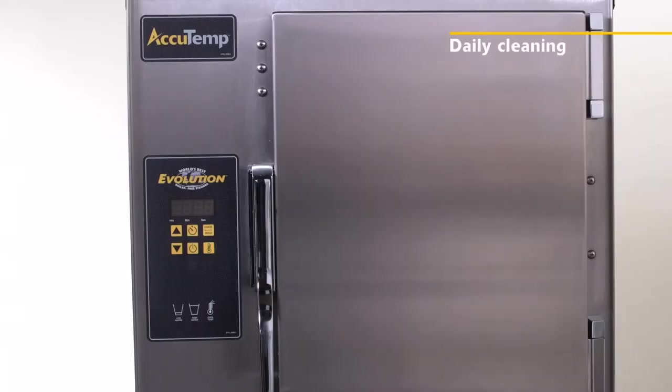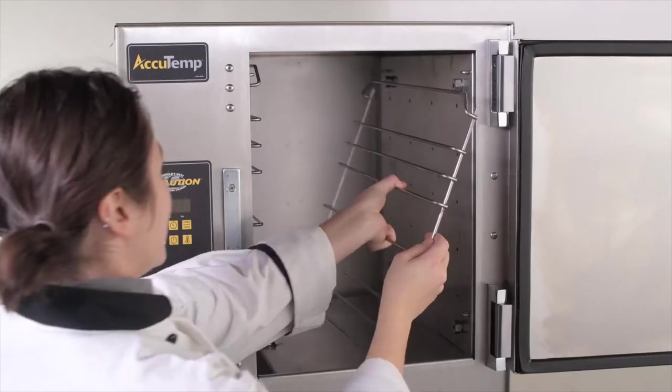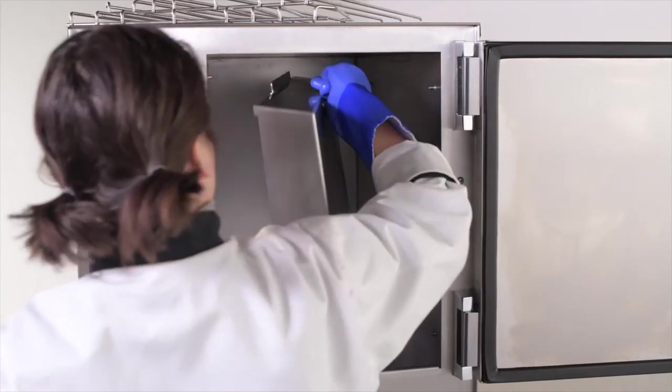Turn the steamer off and wait for the steamer to cool. Open the drain valve to drain water. Remove pan racks, steam distributor panel, and steam collector from the bottom of the steamer.